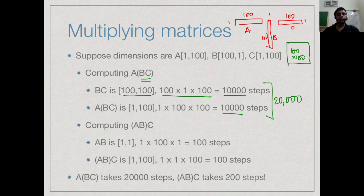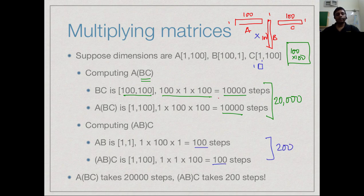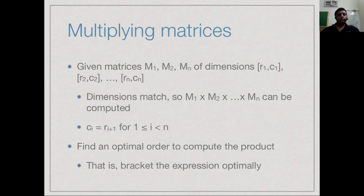On the other hand, if we compute AB first, we get a 1×1 matrix in only 100 steps. Then multiplying that 1×1 matrix by C (1×100) takes another 100 steps — only 200 steps total. There can be a dramatic difference in complexity depending on how you bracket the multiplication.